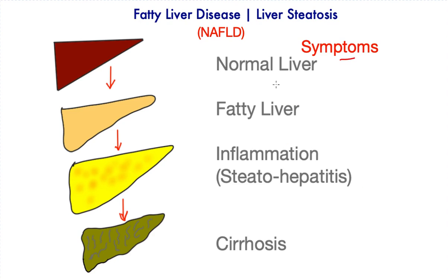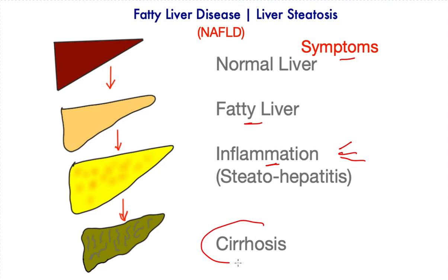Let's look at the symptoms. In initial stages, patients do not have any symptoms. Sometimes doctors may be able to palpate an enlarged liver. When inflammation starts, symptoms are again rare, but may include pain in the abdomen high up on the right side, loss of energy, and sometimes loss of appetite. These are non-specific symptoms, and if this condition progresses to frank cirrhosis, features of chronic liver disease appear.